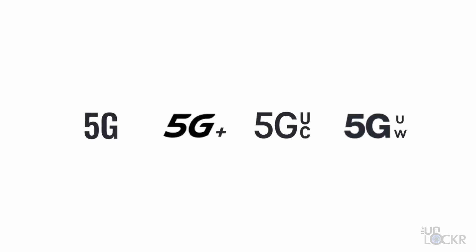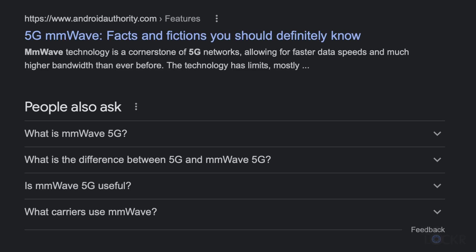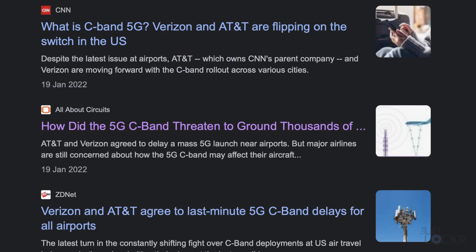You're probably very aware of 5G at this point — the fifth generation cellular wireless network. It's been talked about quite a bit. With it, though, you've probably also heard a ton of other terms thrown next to the word 5G, like sub-six, millimeter wave, and now being talked about a lot, C-band.